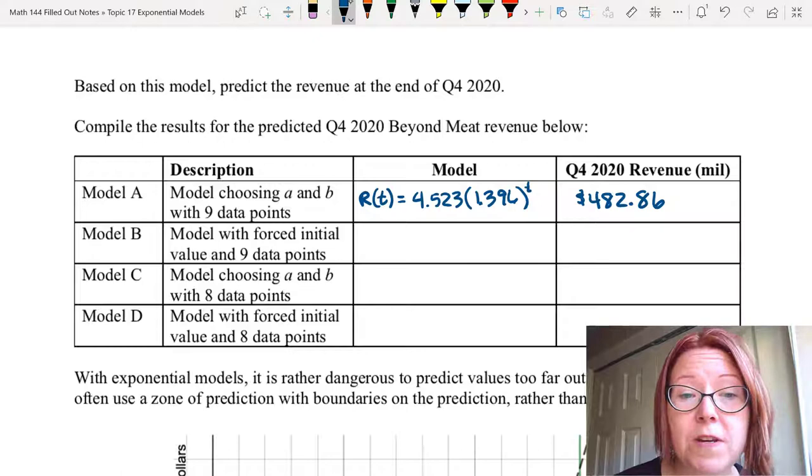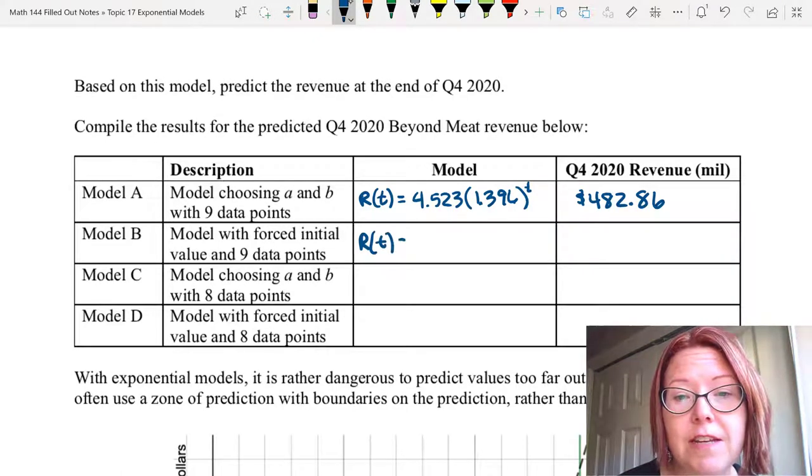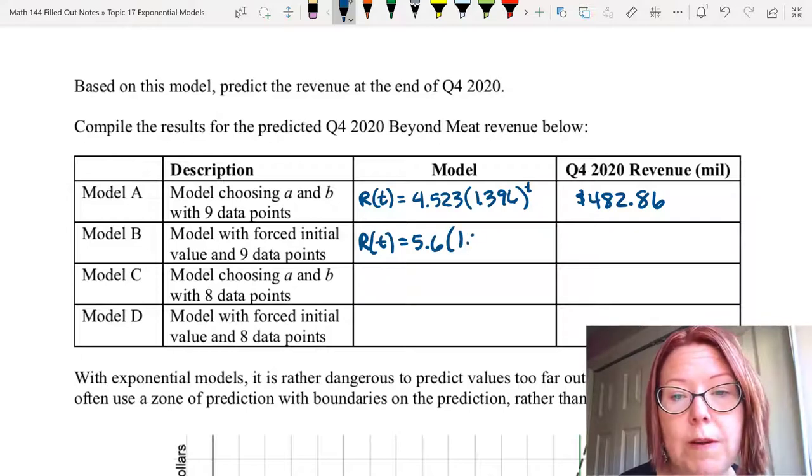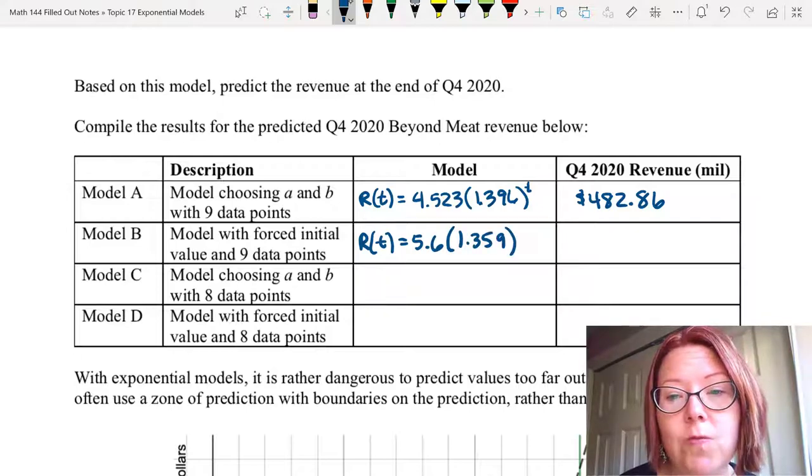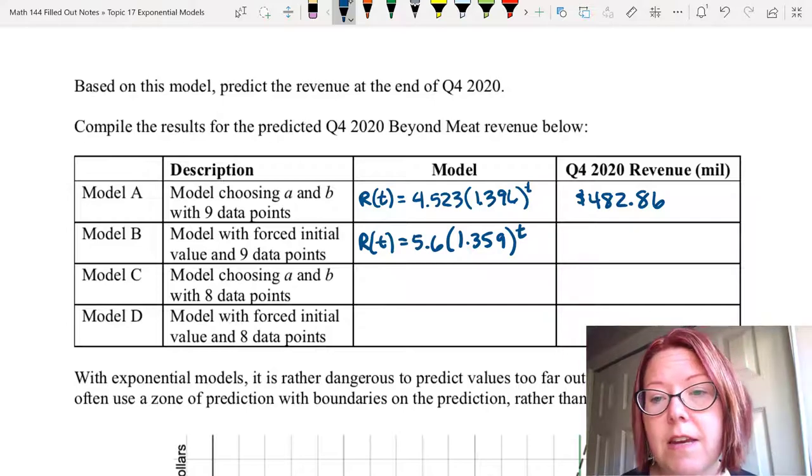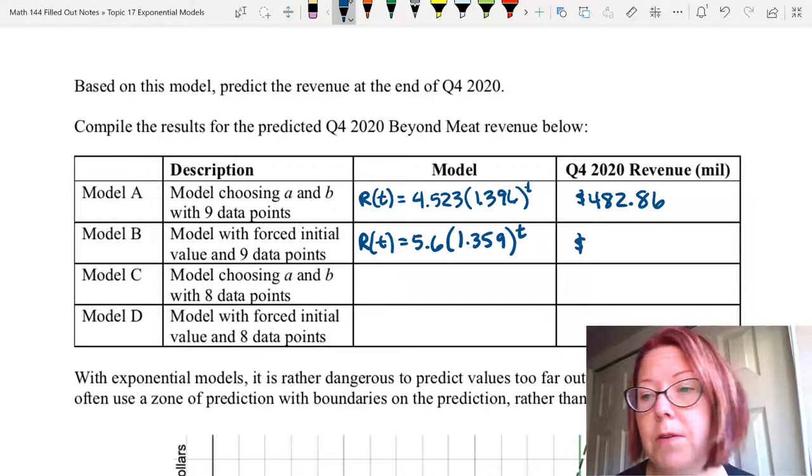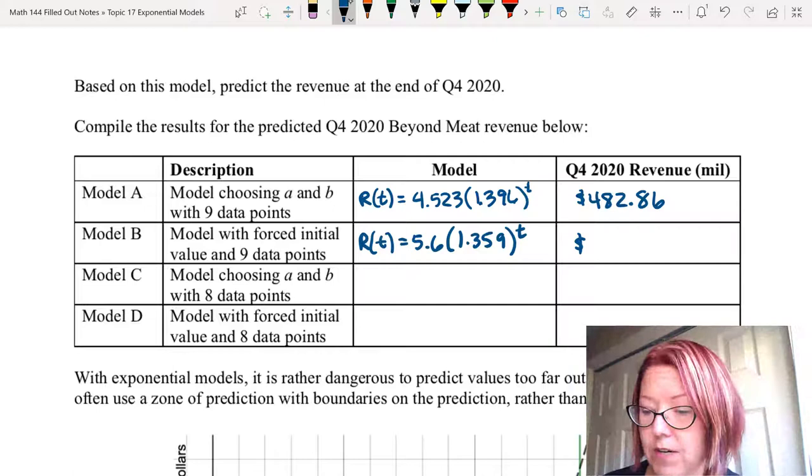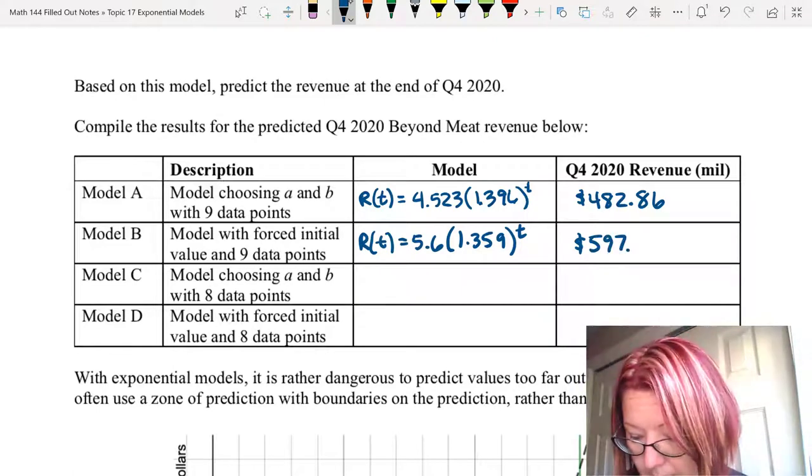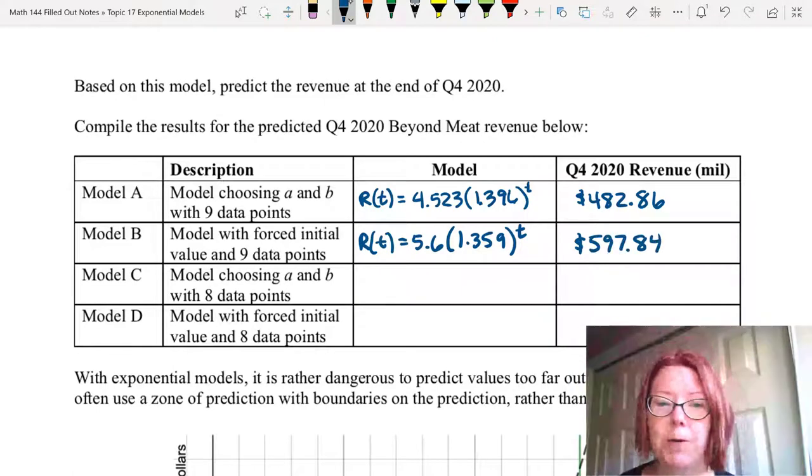So model B has a forced initial value and nine data points. It's R of t equals 5.6 left parentheses 1.359 right parentheses to the t. And the revenue in millions was 597.84. Much bigger number.